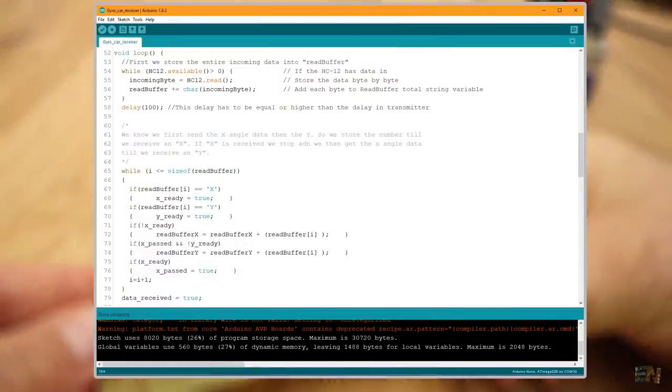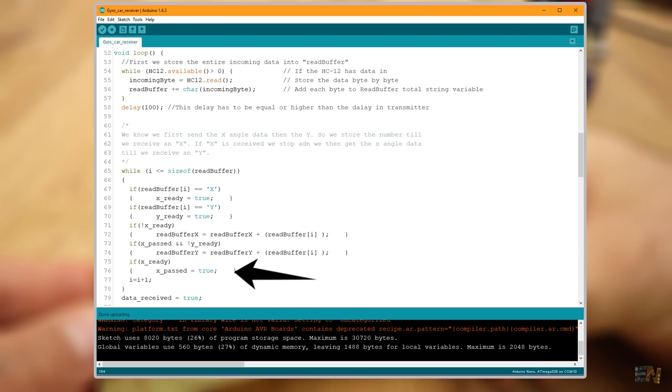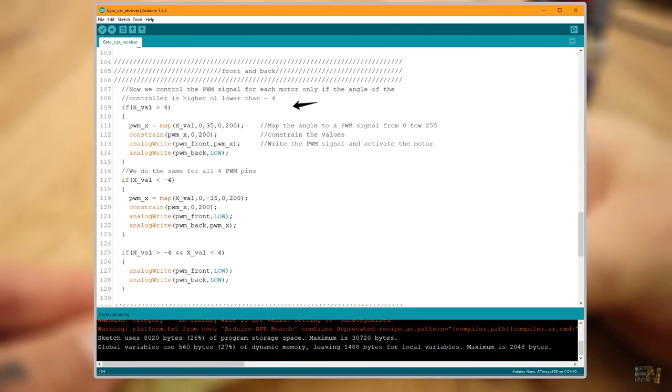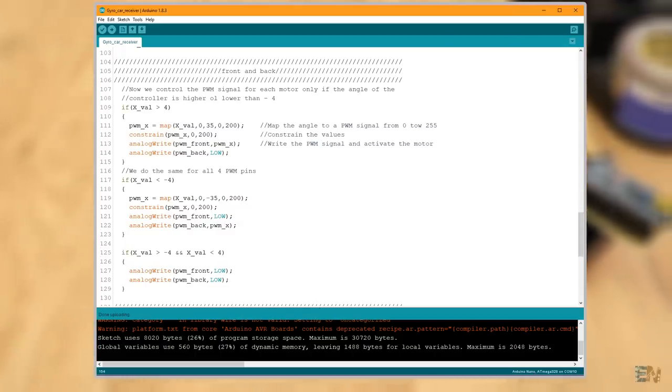This here is the receiver code. We receive the data with the serial function. Then we get the X and Y values into separated variables and finally we control 4 PWM pulses for the motors. That will control both the speed and the direction of rotation of the motors.